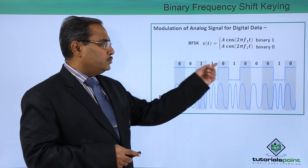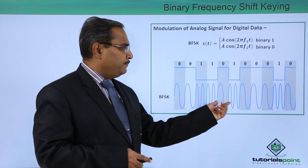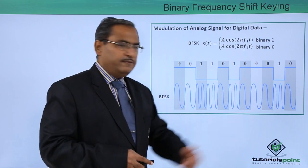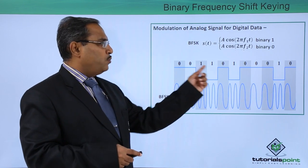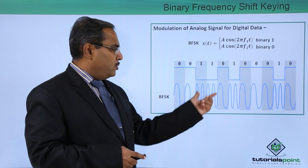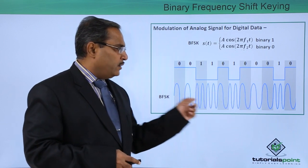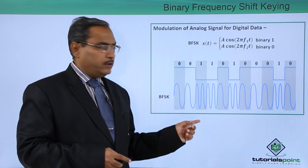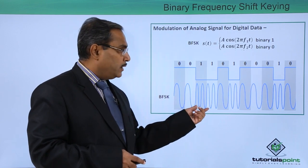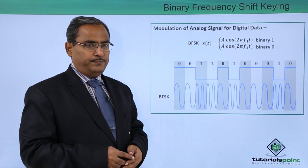Whenever we are having 0s, you can easily identify one frequency of this analog signal, and whenever we are having the binary bit 1, we are having a different frequency. From visual observation, it is quite obvious that this frequency is lesser than this one, so here f1 is greater than f2.